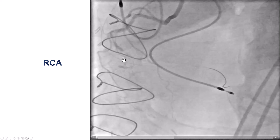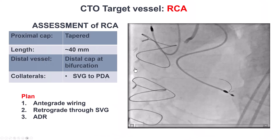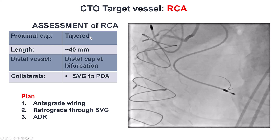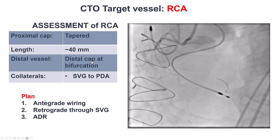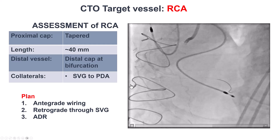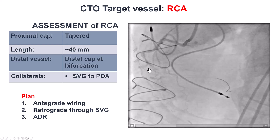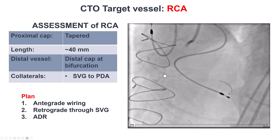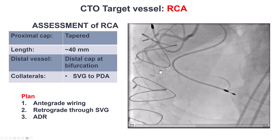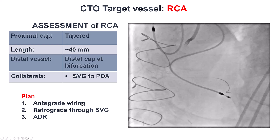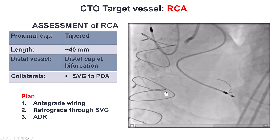Injection of the right coronary artery shows that the proximal cap has a tapered morphology — tapered but clear. Length is about 40 millimeters. There is a bifurcation at the distal cap, and the PDA is filling through the vein graft. Our plan was to first try antegrade wiring, since the occlusion was not too long and there was a clear proximal cap. But if that didn't work, we had a low threshold to convert to retrograde through the saphenous vein graft. The last resort was ADR because of the presence of the bifurcation on the distal cap.